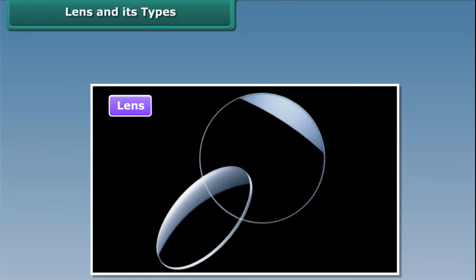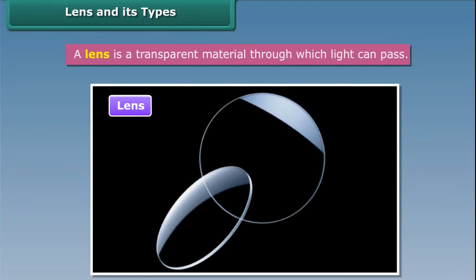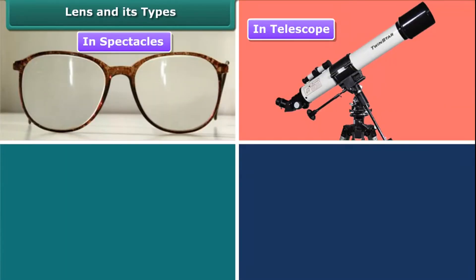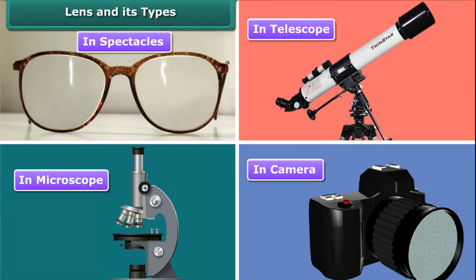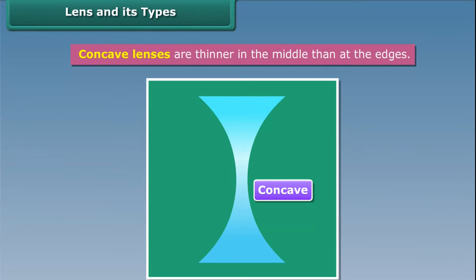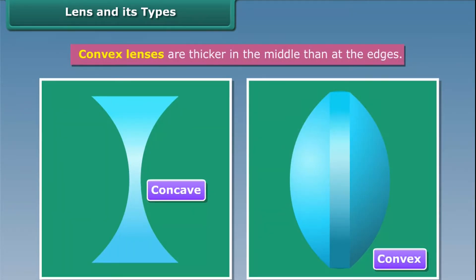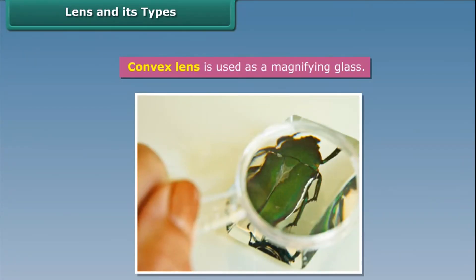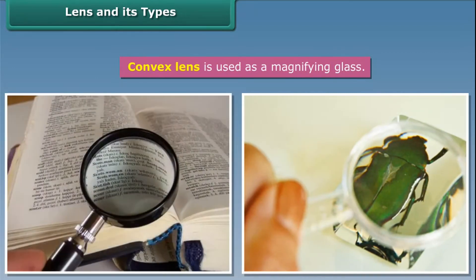Lens and Its Types. A lens is a transparent material through which light can pass. Lenses are widely used in spectacles, telescopes, microscopes, and cameras. There are two types of lenses: concave and convex. Concave lenses are thinner in the middle than at the edges, whereas convex lenses are thicker in the middle than at the edges. A magnifying glass, used to observe body parts of an insect or to read small print, is convex in shape. Hence, a convex lens is used as a magnifying glass.